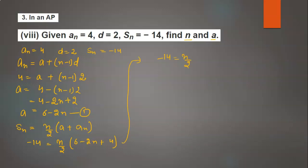Now simplify this: -14 = n/2(6 + 4 - 2n), which is -14 = n/2(10 - 2n). Take common 2 in this bracket, so it will be (5 - n). The 2s cancel, so we will get -14 = n(5 - n), which gives 5n - n².